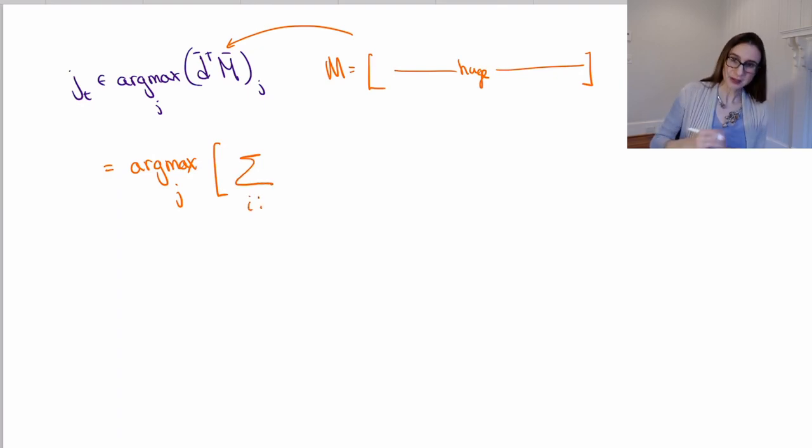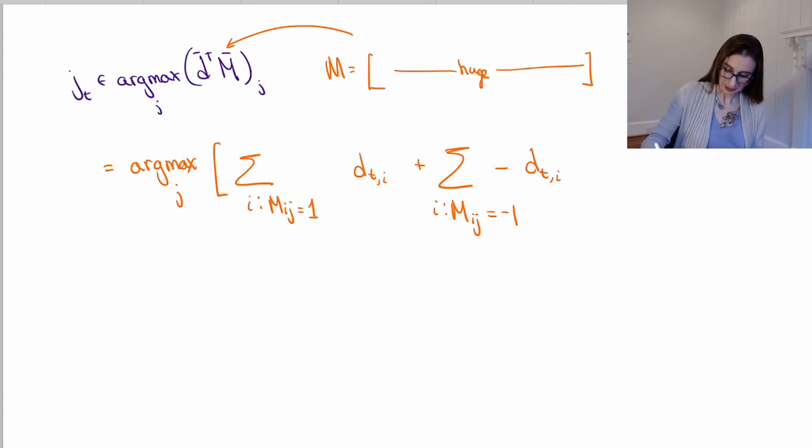I'm going to split it into two sets of data points, right? Because i is data points. So the first set has M_ij equal to one. So these are points that were correctly classified by weak classifier j. And then this is going to be M_ij d_ti. Oh wait, M_ij is just one. So I actually don't need that M_ij there. And then the other sum is for the points where the weak classifier didn't get it right. And so here, this would be M_ij, but that's negative one, and then d_ti there.